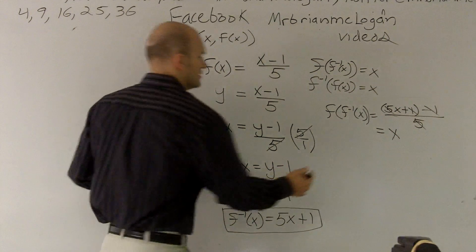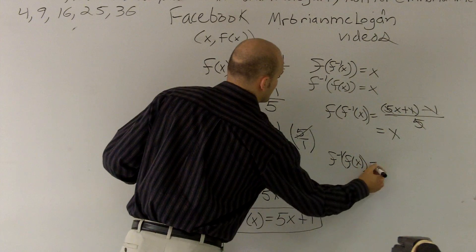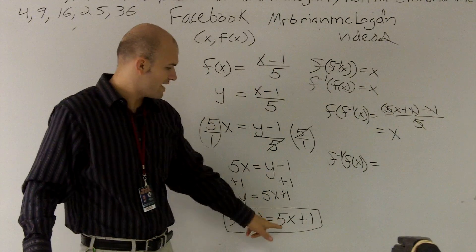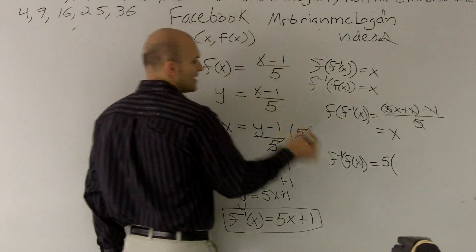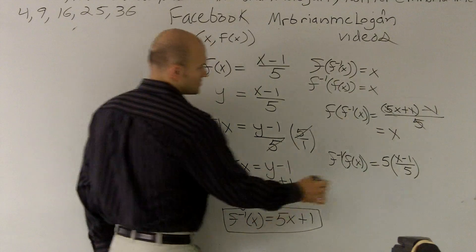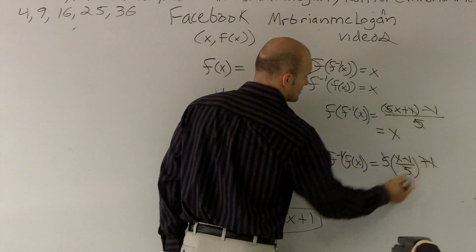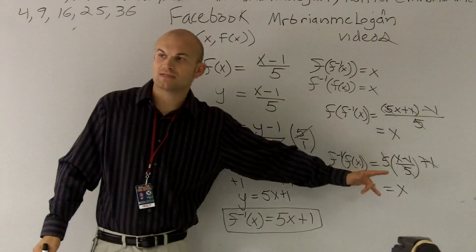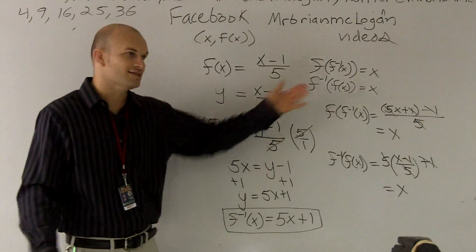We also need to check it the other way. For f inverse of f of x, I'm going to plug in my f of x function into my f inverse. So it becomes 5 times x minus 1 over 5, plus 1. Here the 5s cancel out and then the 1s cancel out, so again I'm left with x. Since the composition both equals x, I can verify that I found the inverse correctly and that these two functions are inverses of each other.